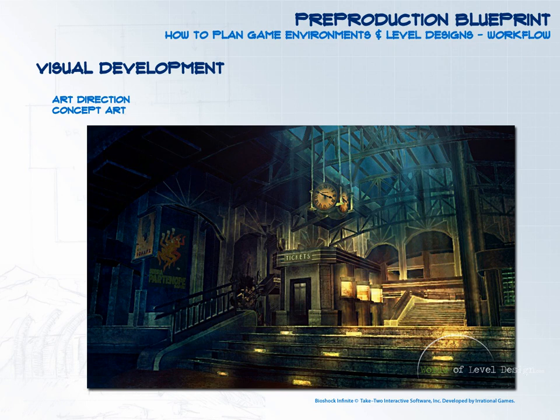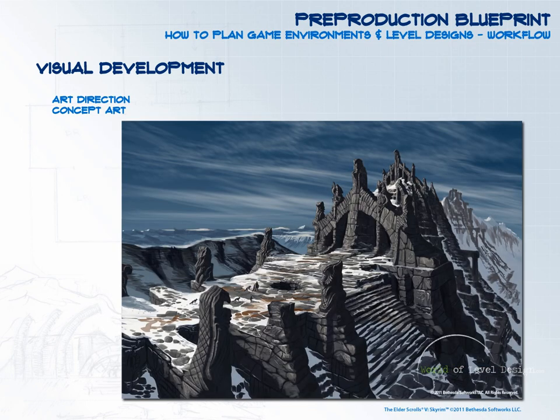The next step is visual development — the art direction usually done through concept art by concept artists. It defines the look and visual aesthetic style of your environment. It often sets the mood, the emotional impact, as well as color palette, architecture, landscape, and scale — anything that helps define how your environment will look in its finished stage.